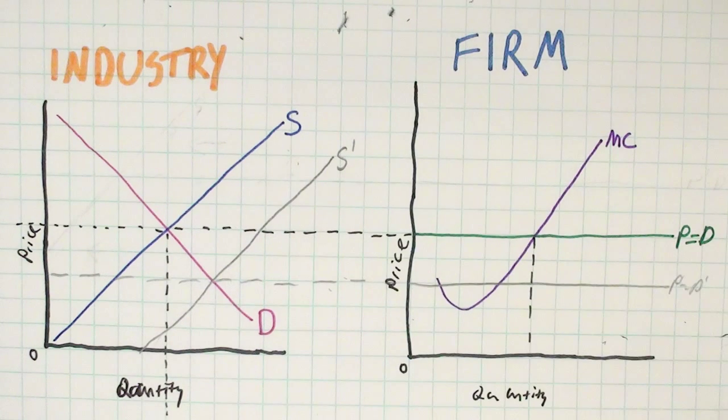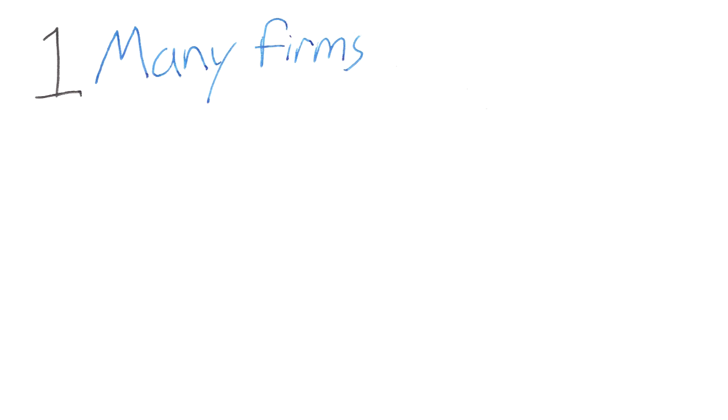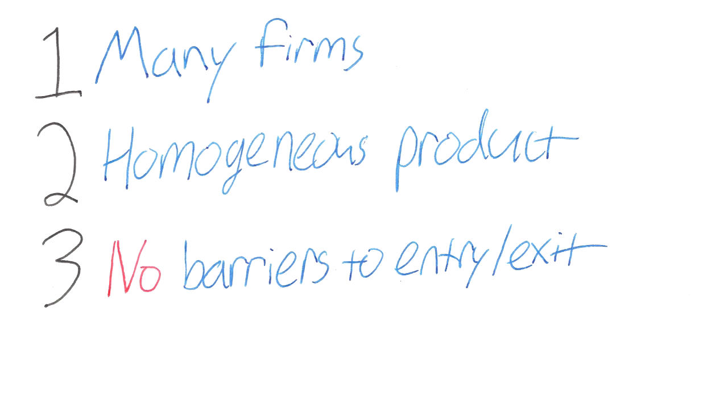The same is true if firms produce too much, with firms leaving the market until things balance out. So there you have it. Many firms producing identical products without any barriers to entry or exit or any control over price. Sounds perfect.